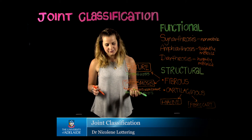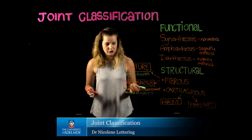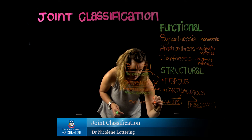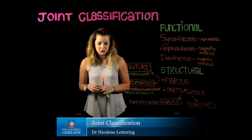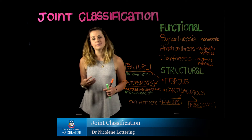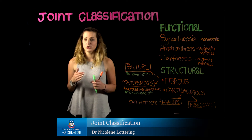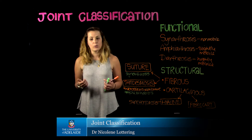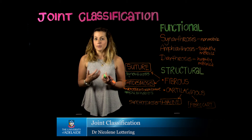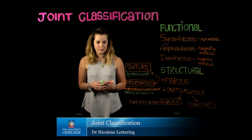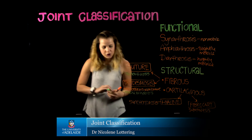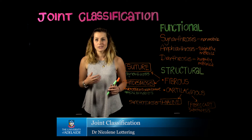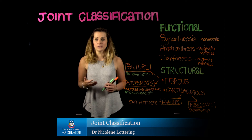A hyaline cartilage interface is going to be consistent with a synchondrosis. For our fibrocartilage joints we then have a symphysis. A symphysis is found between adjacent vertebrae in the form of the intervertebral disc, and we also find symphysis where two bones join each other that are typically load-bearing, such as in the pelvis where we have the pubic symphysis. The functional classification associated with cartilaginous joints is amphiarthrotic — they permit a small degree of movement.